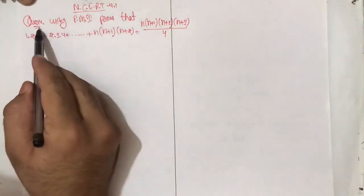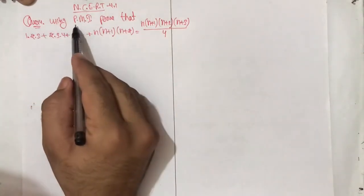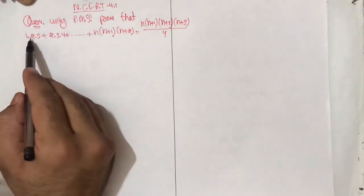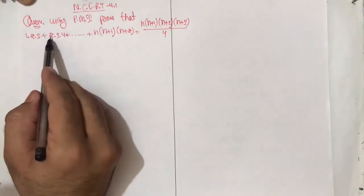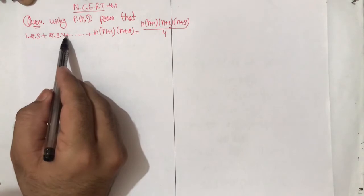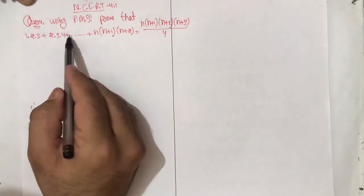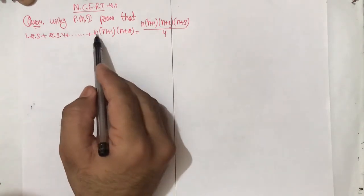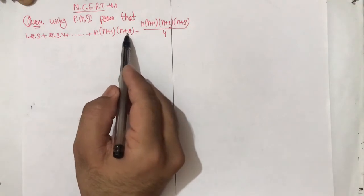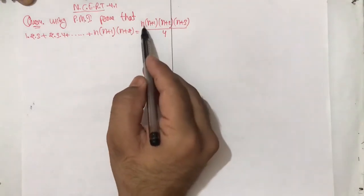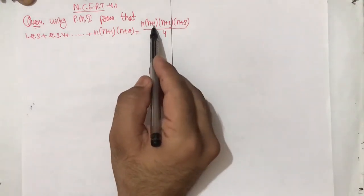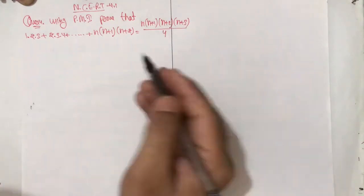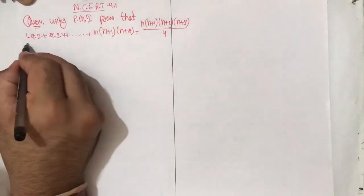Exercise 4.1, question number 4: using the principle of mathematical induction, prove that 1·2·3 + 2·3·4 + 3·4·5 + ... + n(n+1)(n+2) is equal to n(n+1)(n+2)(n+3) divided by 4. Solution: